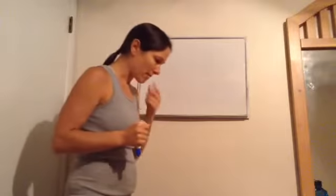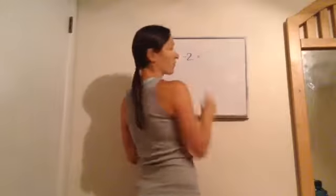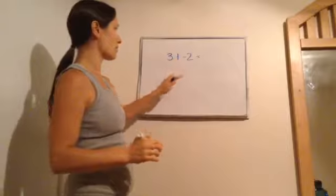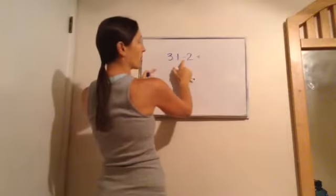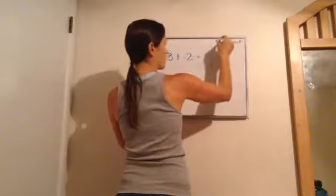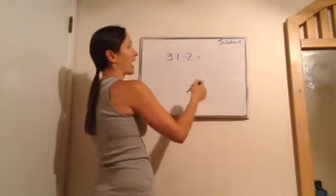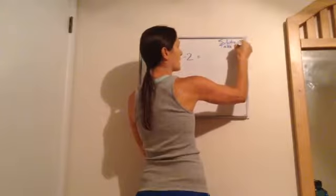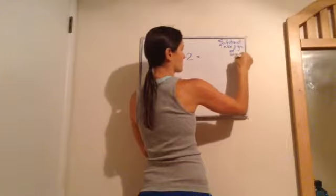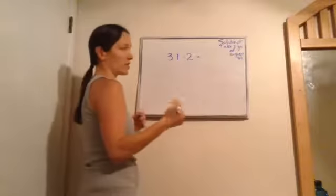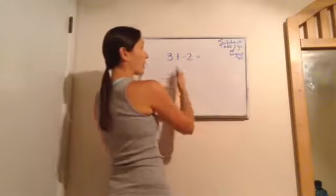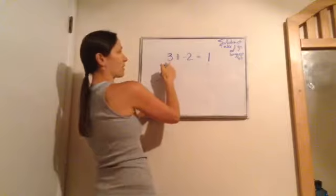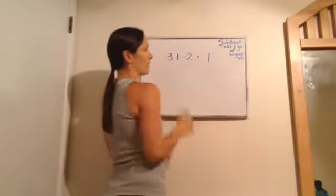Now let's talk about addition of signed numbers. If you were to take something like three plus a negative two, hopefully you remember the rules: if you have opposite signs, you're going to subtract the numbers and then take the sign of the biggest number. Write that down if you don't remember it. So three plus a negative two — I would subtract to get one, and then take the sign of the biggest number. The biggest number is three and it's positive, so I'm going to leave it as positive one.